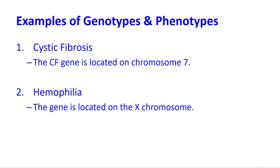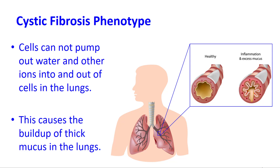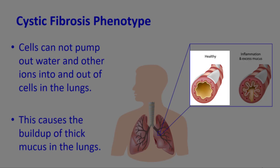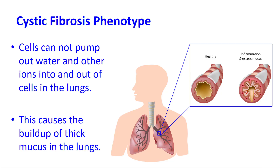I have two examples of a genotype and a phenotype. You don't need to memorize these, but you need to be able to understand and identify them. The first one is cystic fibrosis. Everything about the genes — recessive or dominant, the chromosomes — that's the genotype. The phenotype is the physical characteristics caused by those proteins: the cells can't pump out enough water, so you have mucus buildup in your lungs. The proteins are not working to pump the water out — the phenotype is about the proteins.